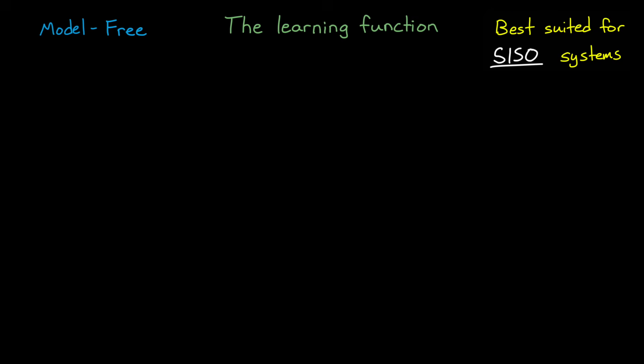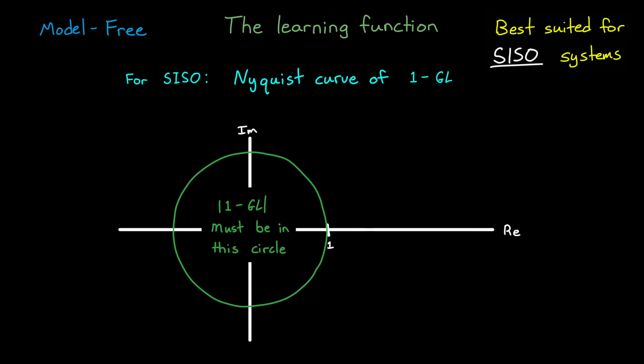Well, one way we can think about this is by looking at the frequency characteristics with a Nyquist plot. The Nyquist curve of 1 minus gl must be within a circle of radius 1 centered at the origin. This way the gain is never larger than 1. So 1 minus gl has to be contained within this circle,